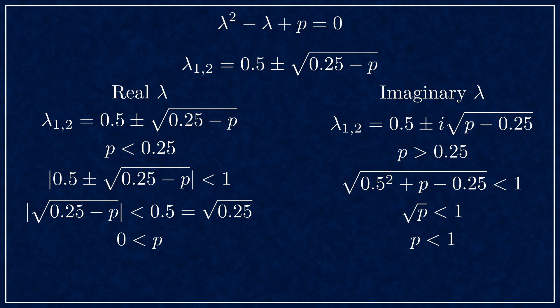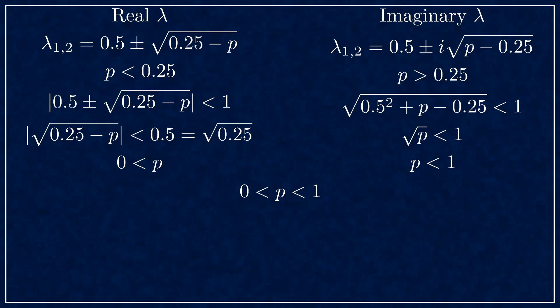Final result, p is between 0 and 1. You can also see that the magnitude of lambda will be the smallest when the whole thing in the square root is 0, which is at p equals 0.25.